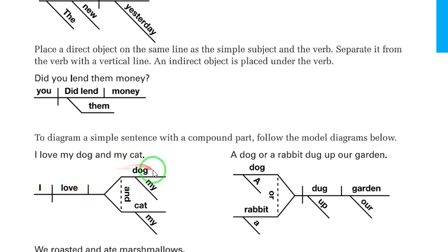And because I have a compound predicate here, my dog and my cat, I can put them on two lines. So I divided the diagram into two parts. I put dog and cat because dog is the first direct object and cat is the second direct object.